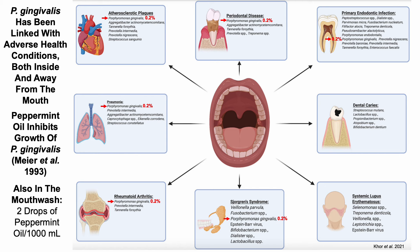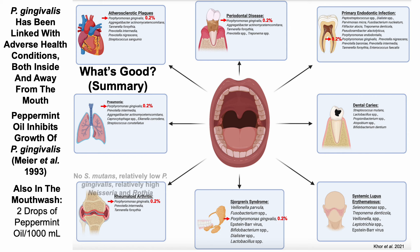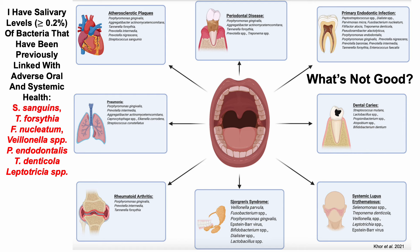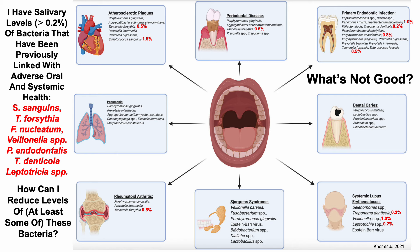To summarize what's good for my salivary microbiome: I have no Streptococcus mutans, relatively low levels of P. gingivalis, and relatively high levels of Neisseria and Rothia, all linked with positive oral health. What's not good: I have bacteria at ≥0.2% that have been linked with adverse health — including bacteria linked to atherosclerotic plaque, rheumatoid arthritis, dental root infections, and lupus. So how can I reduce levels of these bacteria?